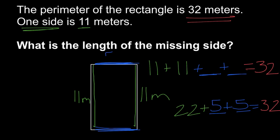So these sides are each five meters. 22, five plus five is ten. 22 plus ten is 32. So the missing side length is five meters.